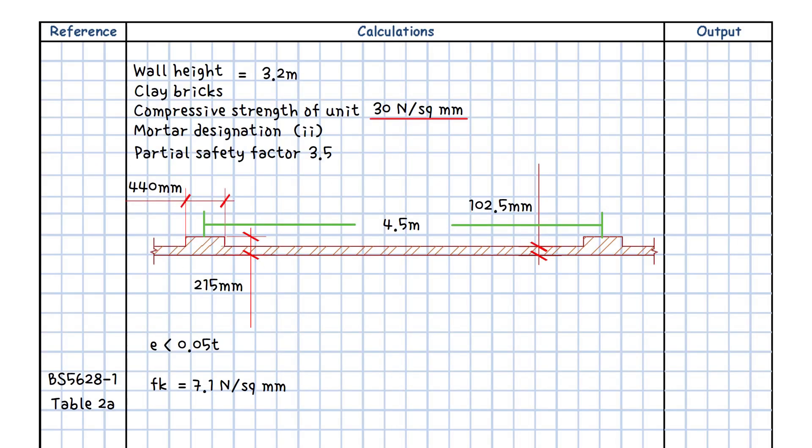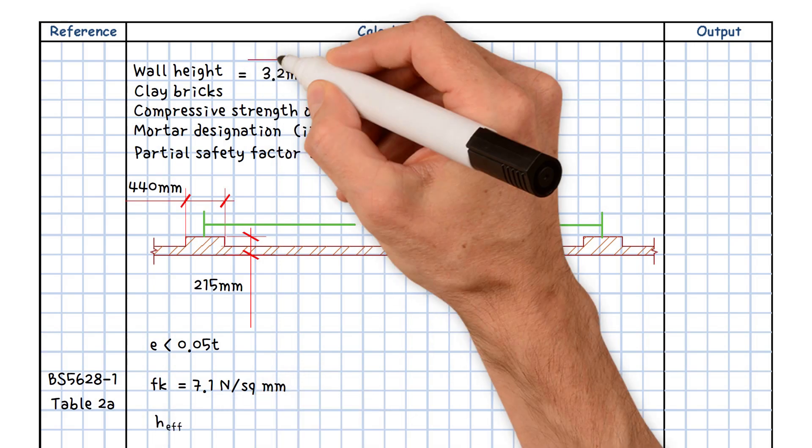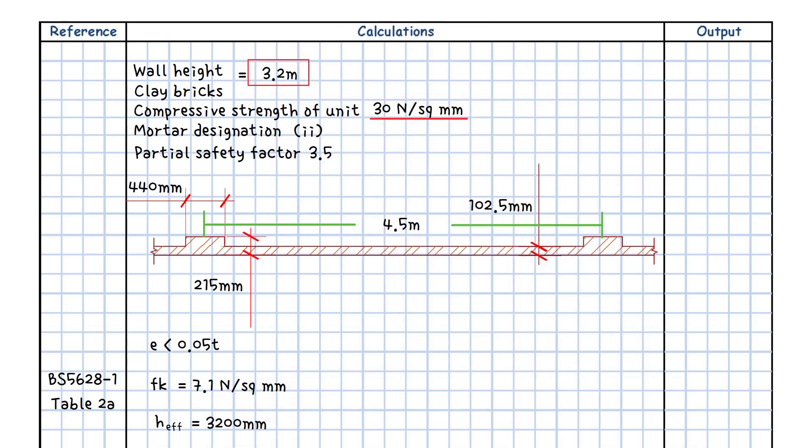As previously stated, we will assume simple resistance to lateral loading. As a result, effective height equals the actual height 3.2 meters.